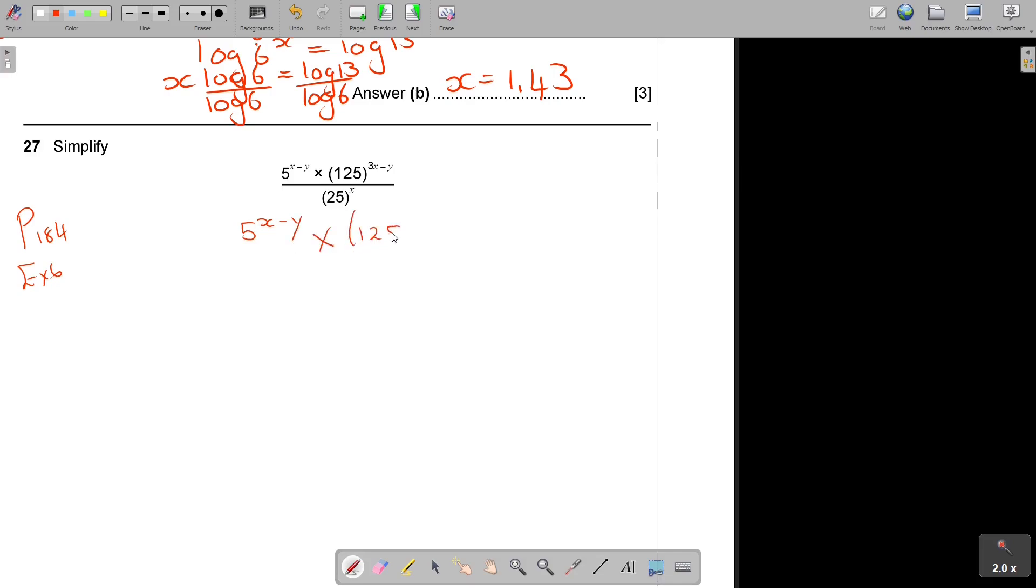So 5^(X-Y) multiply 125^(3X-Y) over 25^X. What you always remember, prime factors. So, 125. You can just go and say 5, 25, 5, 5, 5, 1. And what was 25? 25 was just then the 5, 5, 5, 1. So, let's just rewrite that. So, it's going to be 5^(X-Y) multiply 5 to the power of 3(3X-Y) over 5 to the power of 2X.